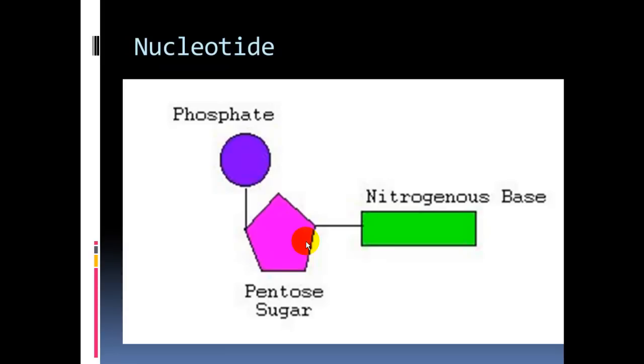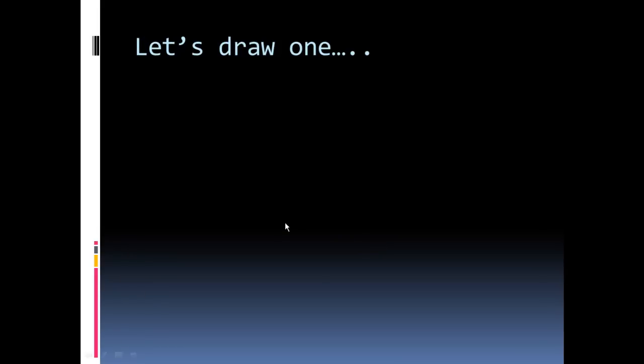A nucleotide is built of three parts: a five-carbon sugar, a phosphate group (the circle), and a base containing nitrogen (rectangular shape). Let's draw one: the sugar, the circle for phosphate, the rectangle for the nitrogen-containing base. That's the basic building block of nucleic acids.